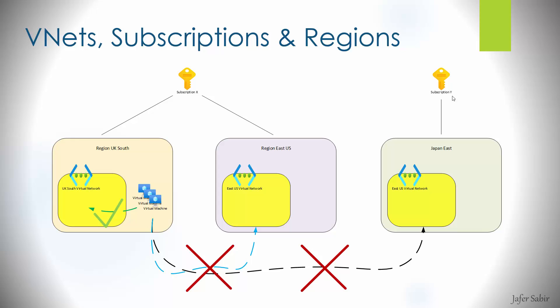A VNet itself is characterized by a collection of address spaces defined as CIDR blocks. A subnet is a child resource of a VNet and helps define segments of address spaces. Network interface cards can be added to subnets and connected to VMs. Let's have a look at a scenario for creating VNets.